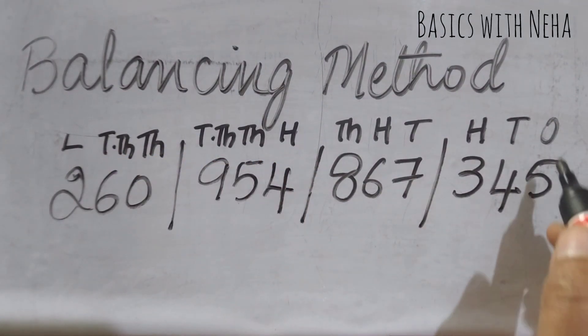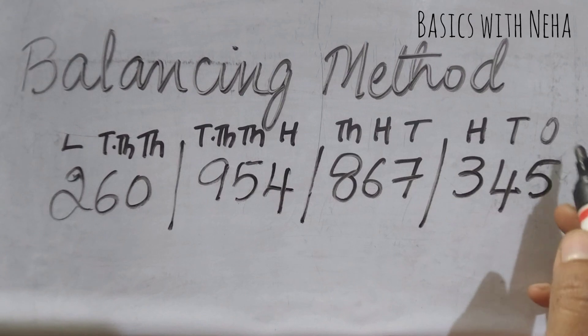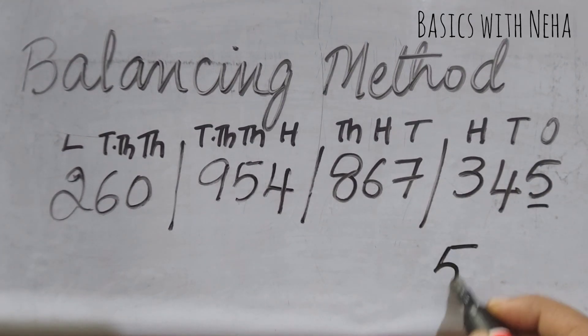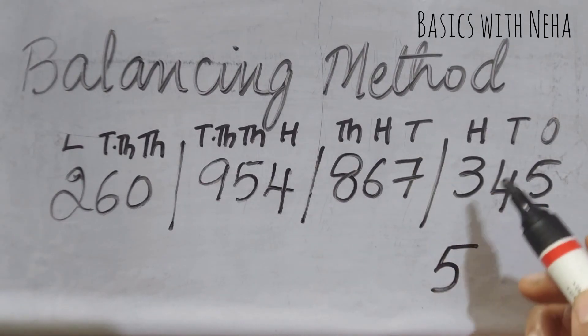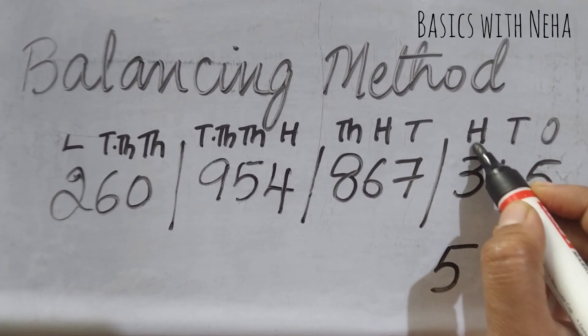We'll have to add the same place value digits. For example, I'll take the five as it is. I have tens and tens place here, so seven plus four is eleven. I'm going to take one carry on the hundreds place and write one here.